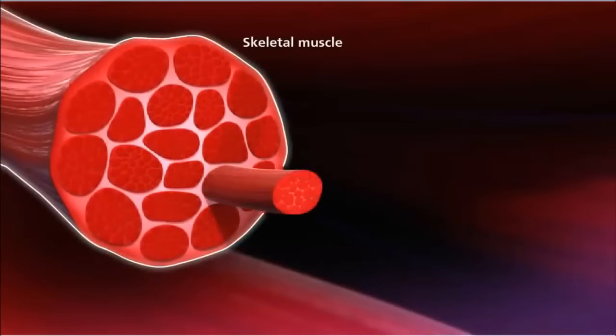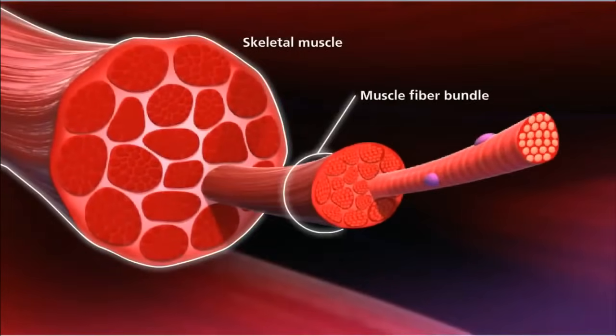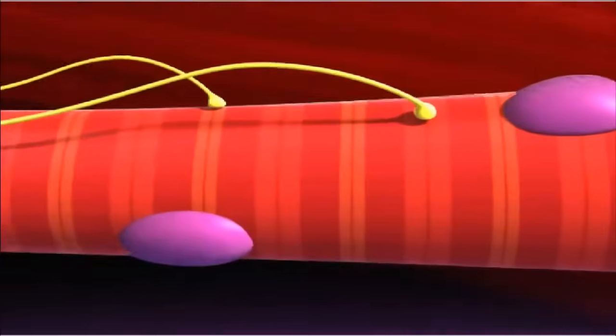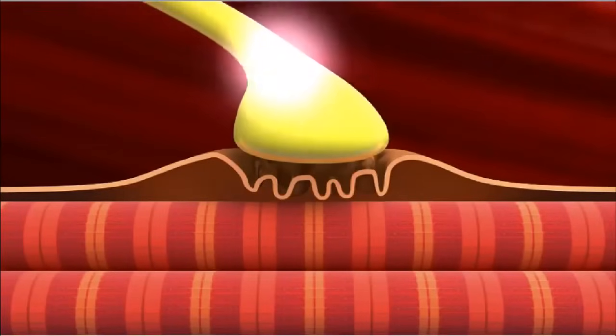Skeletal muscles are composed of bundles of muscle fibers. Muscle fibers are long cylindrical cells containing several nuclei. Muscles will contract or relax when they receive signals from the nervous system.